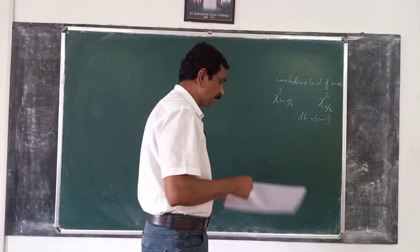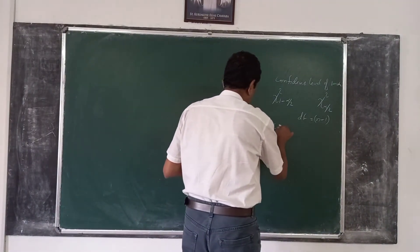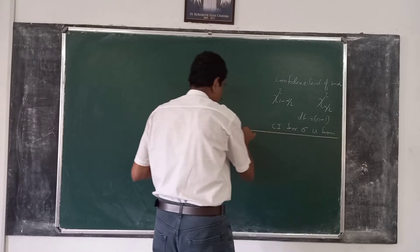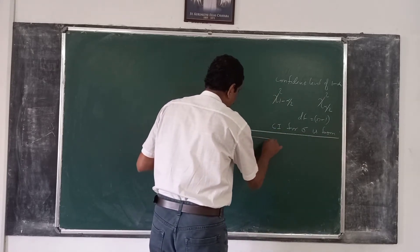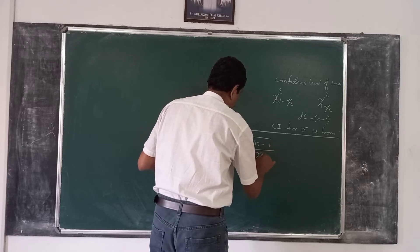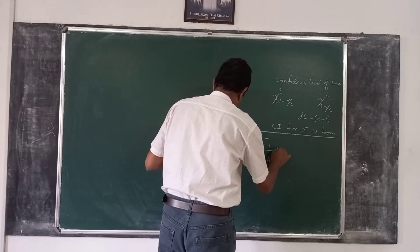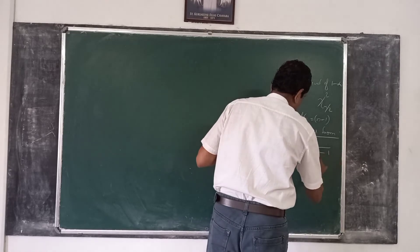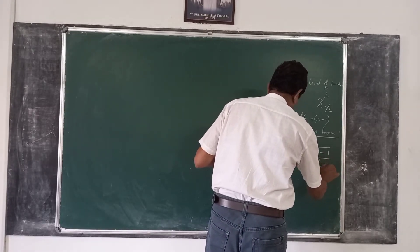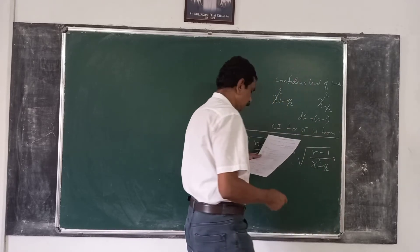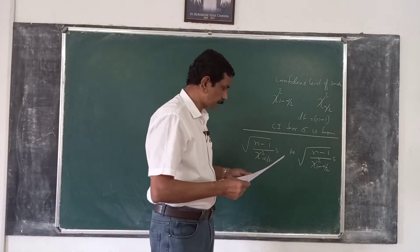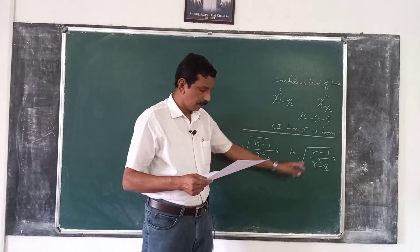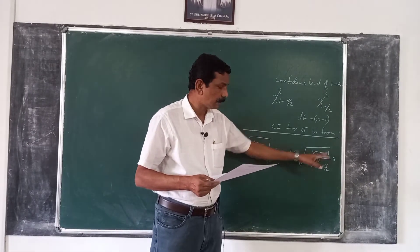Then the confidence interval for sigma is from the root of (n minus 1) divided by chi-square (1 minus alpha/2) into s. Chi-square (alpha/2) and chi-square (1 minus alpha/2) are obtained from the table. N is the sample size and s is computed from the sample.